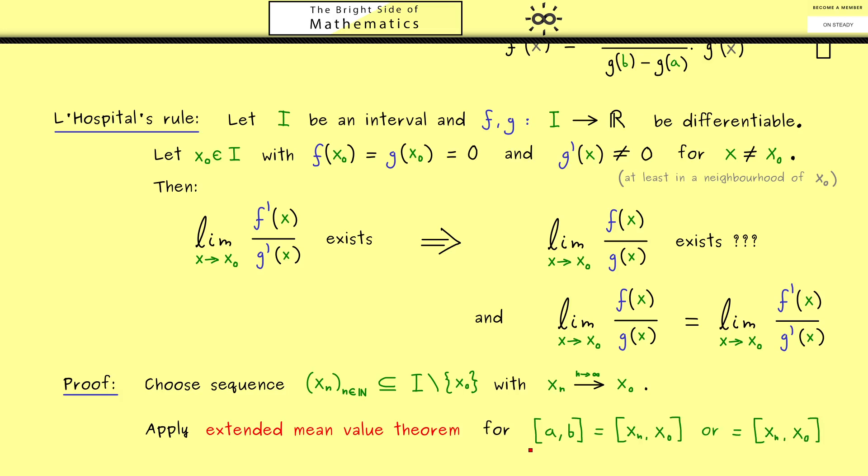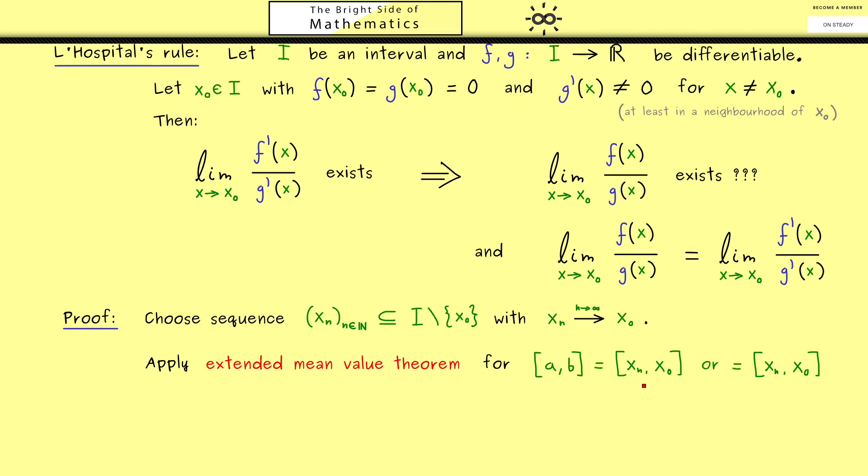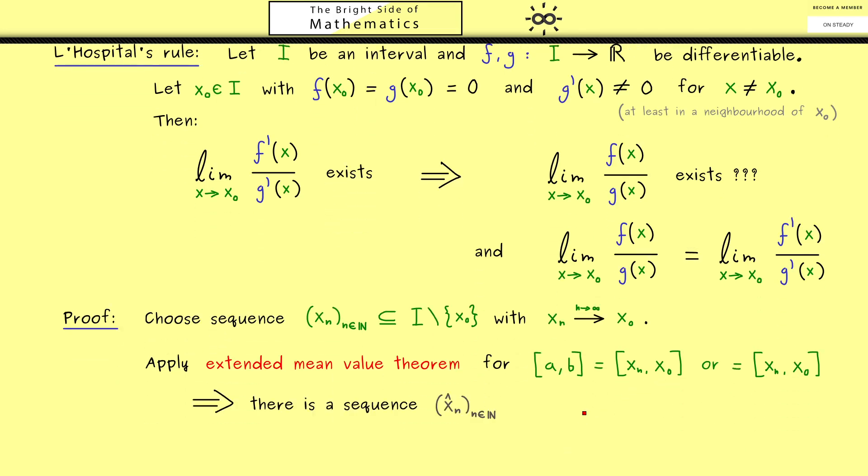And now the idea is that we apply the extended mean value theorem from above for every n. To put it in other words the interval [a,b] should now be the interval [xₙ,x₀]. Or the interval [x₀,xₙ] depending which number is bigger. Most importantly this means that our point x̂ lies between xₙ and x₀.